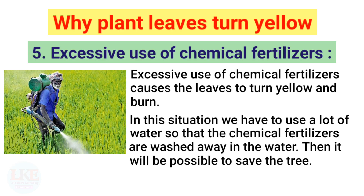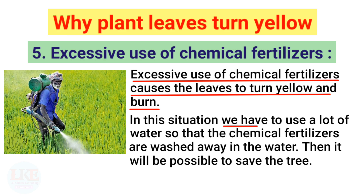Excessive use of chemical fertilizers causes the leaves to turn yellow and burn. In this situation, we have to use a lot of water so that the chemical fertilizers are washed away. Then it will be possible to save the tree.